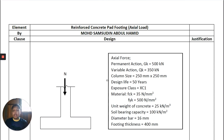For this example we have a pad footing with the following design specifications: permanent action G_K = 500 kN, variable action Q_K = 350 kN, and column size 250 mm × 250 mm. Sometimes the permanent and variable actions are given as a combined total, but in this case they are given as separate values.